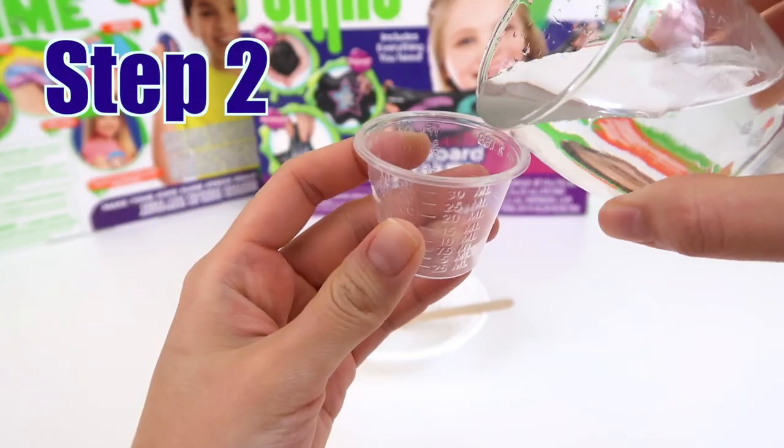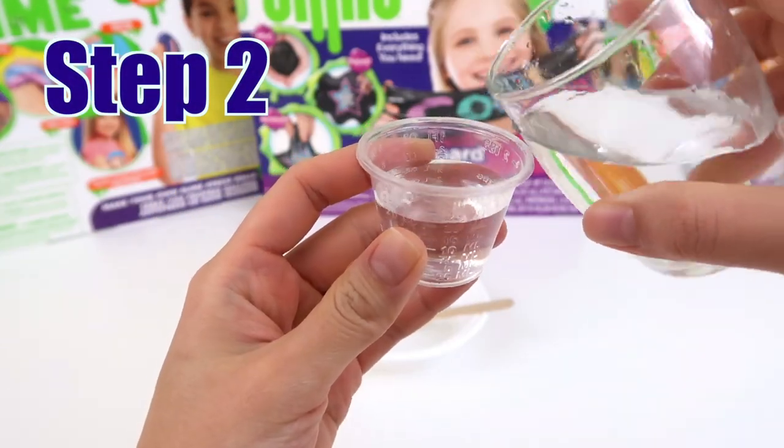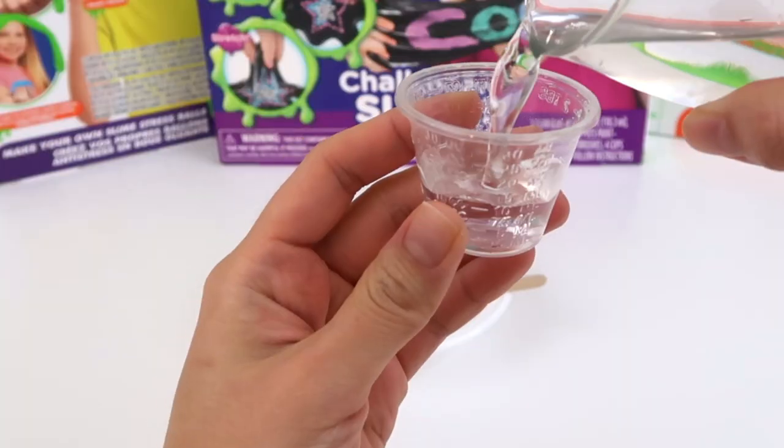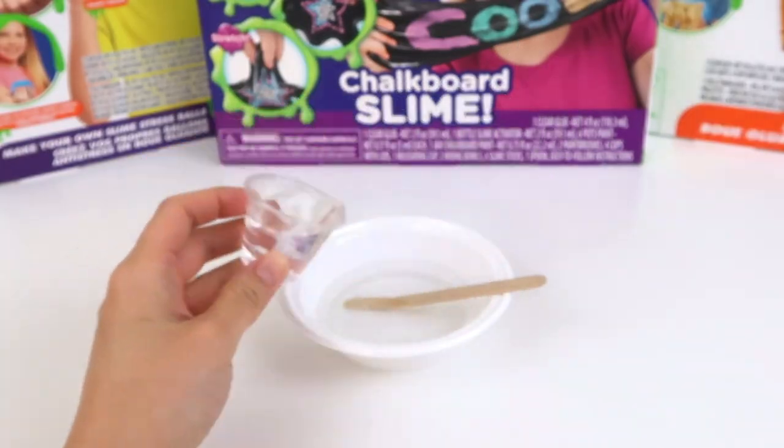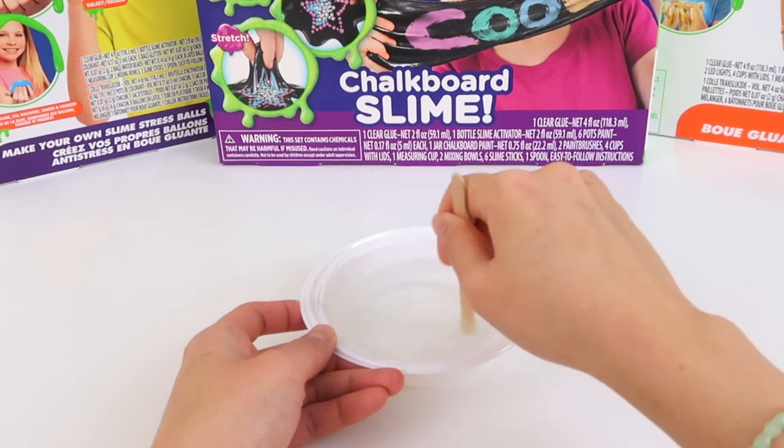Step 2. Measure and pour 45 ml of room temperature water. I did 20 ml plus 25 ml to make 45 ml. Stir.